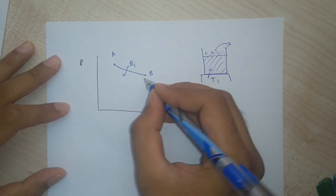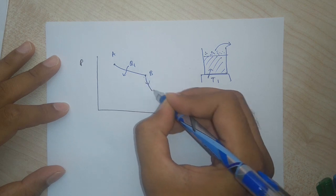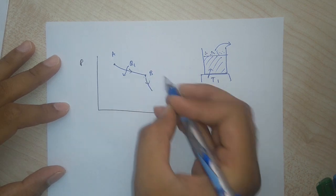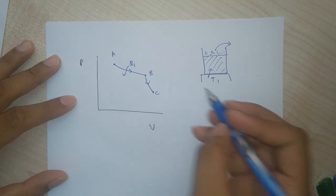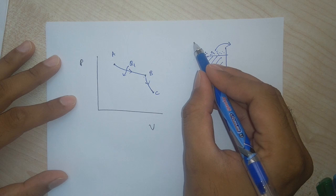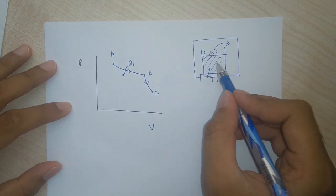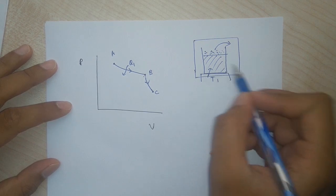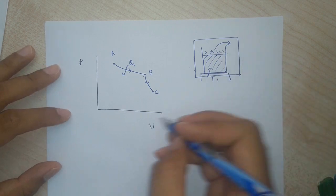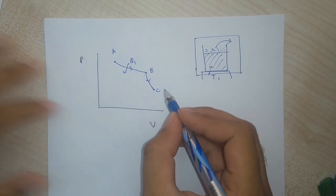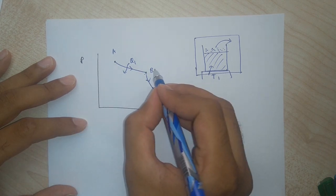From point B we adiabatically expanded the gas — adiabatic curves are much steeper — and we expanded the gas till we reached point C. For the adiabatic process, the full system was isolated, meaning no heat was allowed to leave or enter the gas. At point C the temperature of the system happened to be T2, while along AB it was T1.